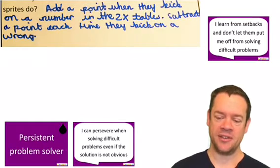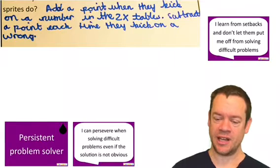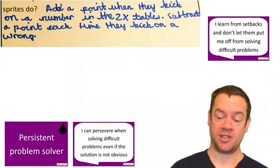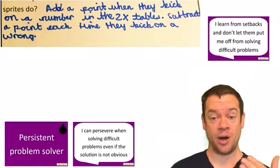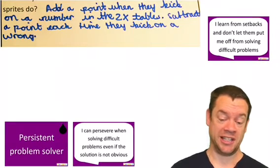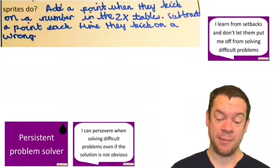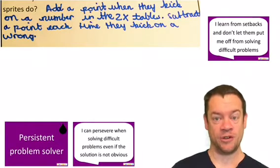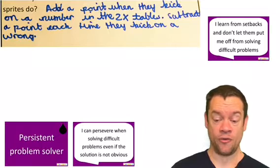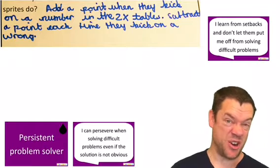Let's have a little look here. They're trying to add a point when they click on a number in the two times table and subtract a point each time they click on the wrong number. They can go back to their algorithm, they can go back to their decomposed project that they did in the first place, and they're going to get stuck.